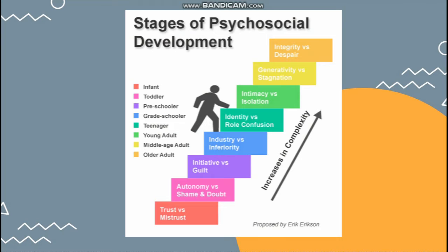The development occurs from infant, toddler, preschooler, grade schooler, teenager, young adult, middle age adult, and elder adult. The conflicts, starting from the bottom, are: trust versus mistrust, autonomy versus shame and doubt, initiative versus guilt, industry versus inferiority, identity versus role confusion, intimacy versus isolation, generativity versus stagnation, and integrity versus despair. The conflicts also increase in complexity, and each stage has its own virtue that the person needs to develop before moving on to the next stage.